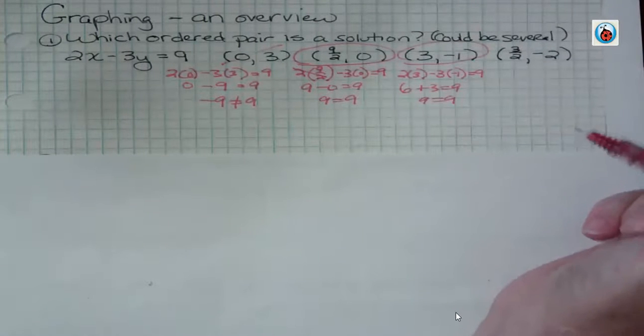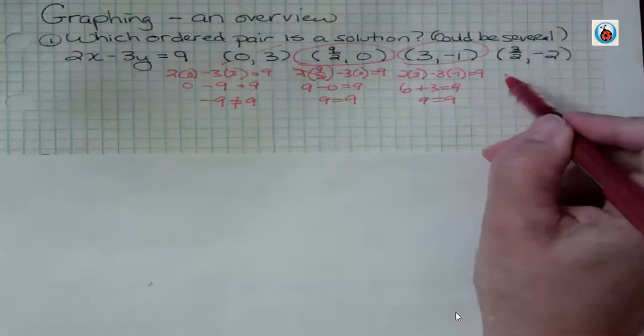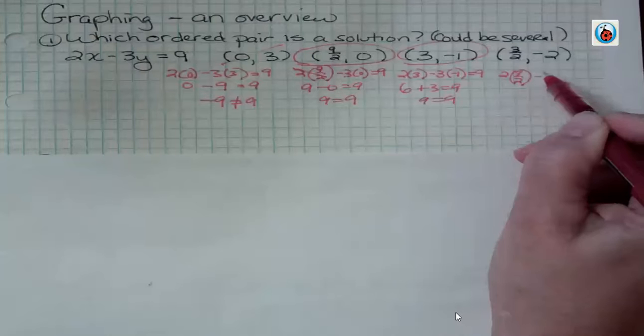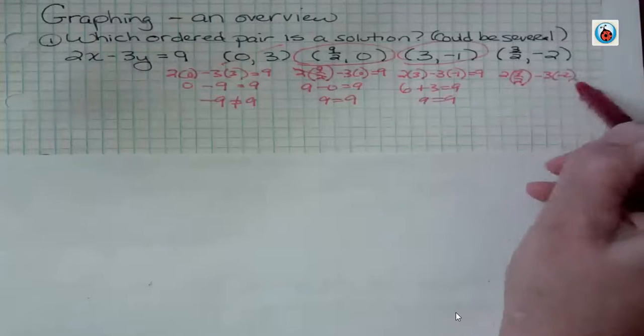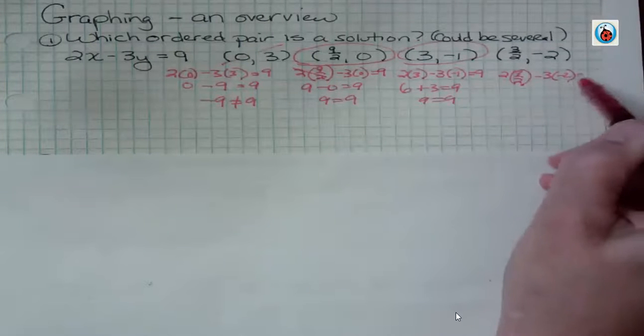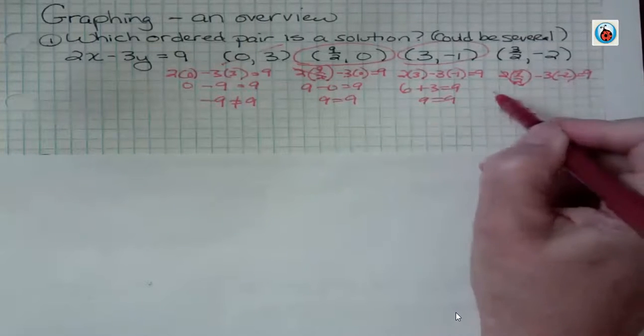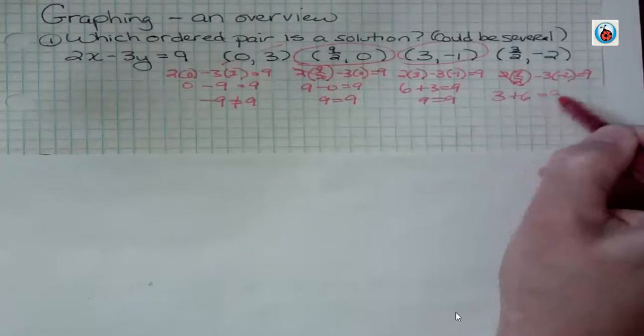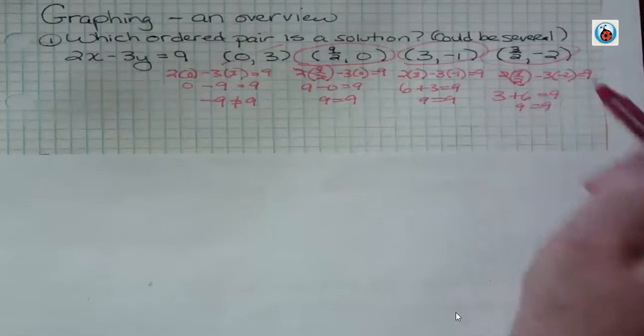And the last one, I'm saying 2 times 3 halves minus 3 times negative 2 is supposed to be 9. This cancels, giving you 3. Negative 2 times negative 3 is 6, and 9 equals 9, so yes, that is a solution.